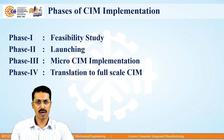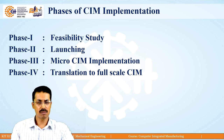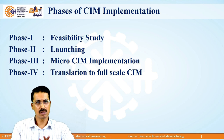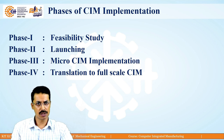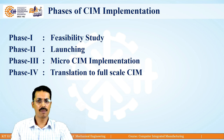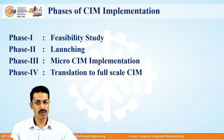After considering all these points, once it is decided that you are going for the CIM system, there are different phases in implementation of CIM. You cannot implement it abruptly or all at once. There are four phases in implementation of the CIM system. We will discuss these phases one by one.